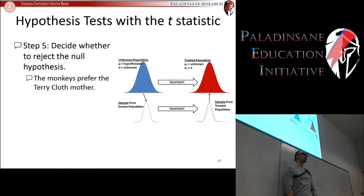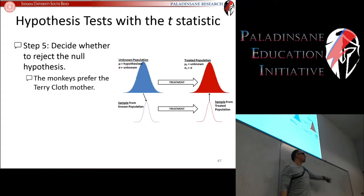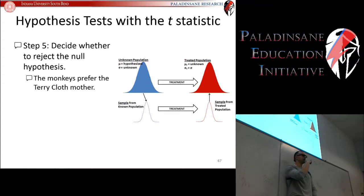Welcome to the real world. This is an actual real-world type situation where we had access to information that we would have in a real psychology experiment. We didn't know what the population actually was, but we knew what the hypothesis said the population would look like if there was no preference. We found out where our sample actually is and concluded that monkeys do prefer the soft, cuddly mother. If you're unfamiliar, this opened up the entire area of attachment theory — the idea that parents are more than just resource providers of food, shelter, and clothing, but that providing emotional support is also very important.